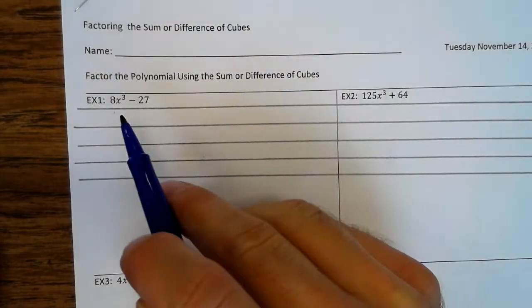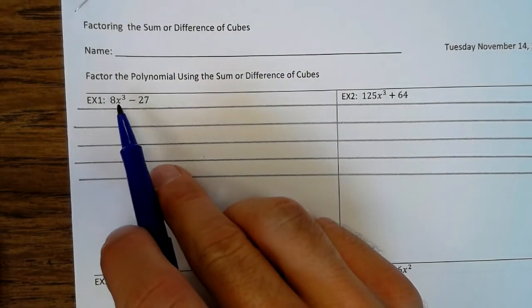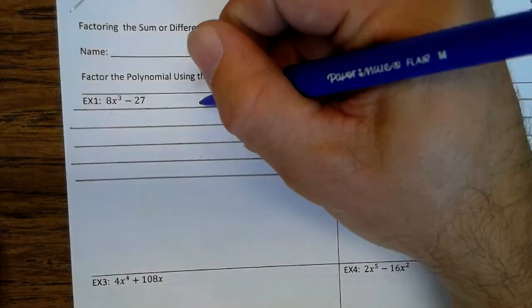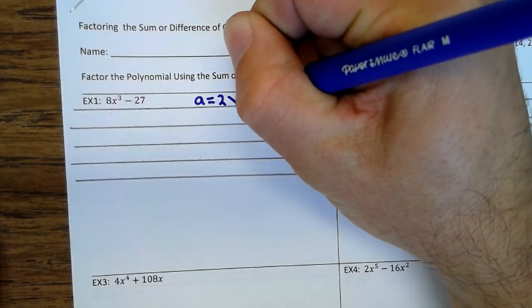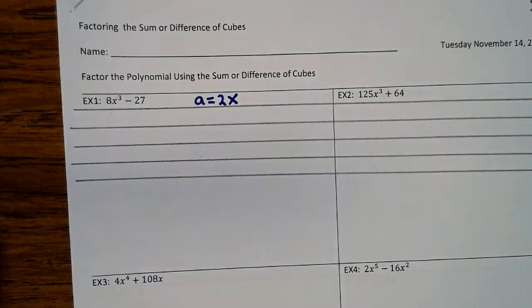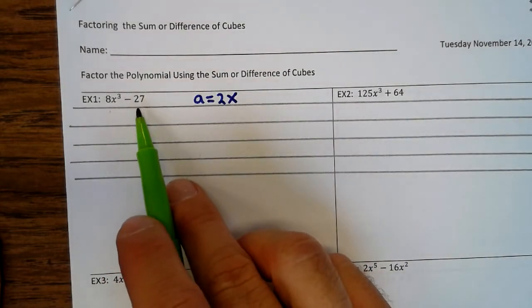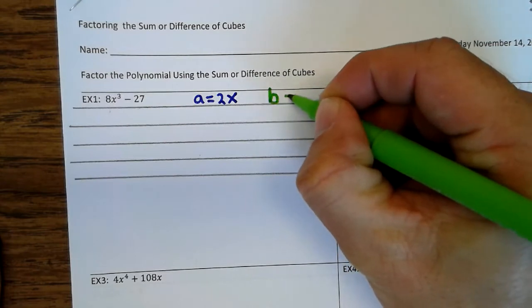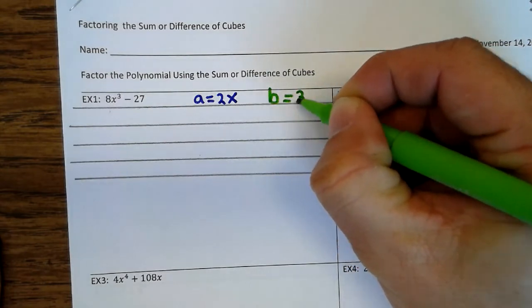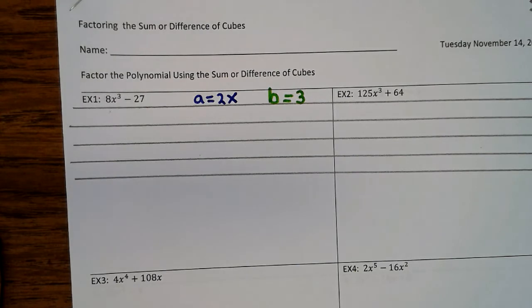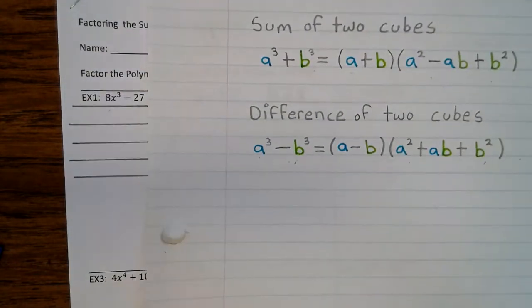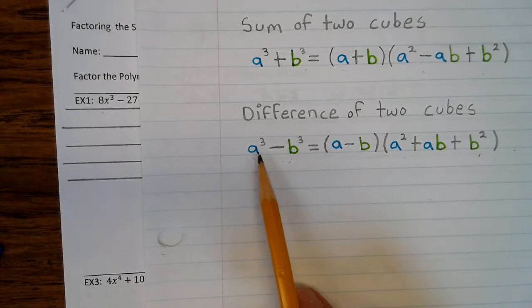So you have to think, well, what do you cube to get 8x cubed? Well, 2 cubed gives you 8, and x cubed gives you x cubed. So A is 2x. And then you ask yourself, well, what do you cube to give you 27? Well, that's 3. So B is 3. So now you have that, you identify which form you're going to use.